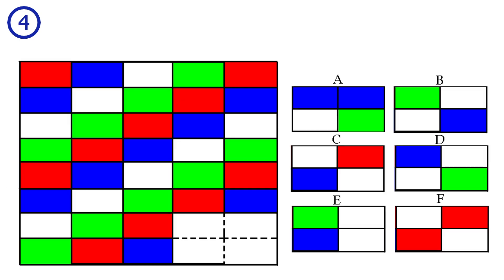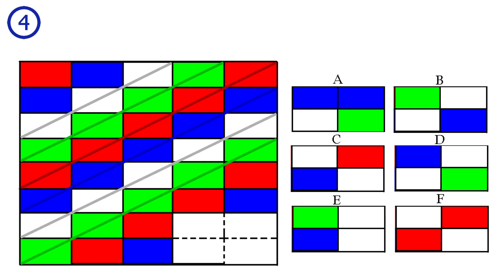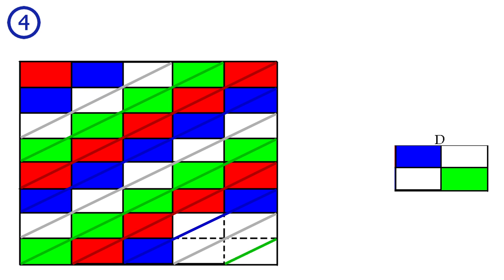Puzzle number four. Here we have repetitions in the columns from top right to bottom left. The diagonals repeat: white, green, red, blue, white, green, red, blue, white, green. Answer D is correct.